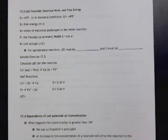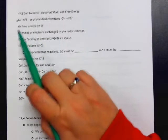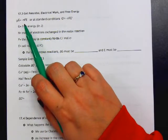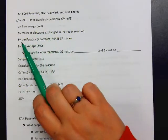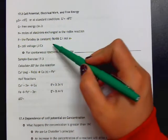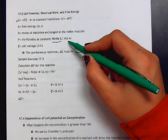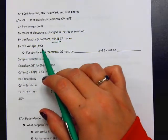All right, in this video we're going to talk about cell potential and free energy. If you recall, we talked about free energy a couple of lessons ago, and that is what we call delta G. So delta G, our Gibbs free energy, is equal to minus n, which is the number of moles of electrons exchanged in our redox reaction, times our Faraday constant, which is 96,486 coulombs per mole of electron, times our cell voltage, which is measured in joules per coulomb, which is a volt.